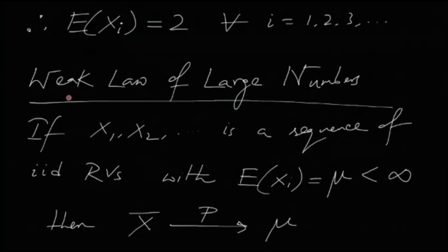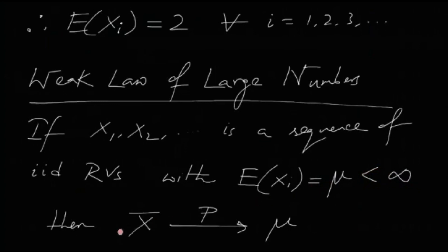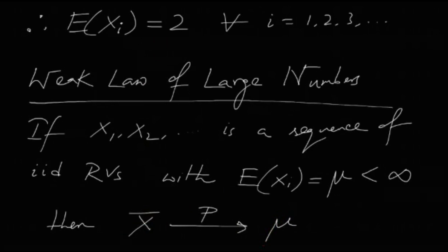By the Weak Law of Large Numbers: if X₁, X₂, X₃, ... is a sequence of IID random variables with E[Xᵢ] = μ, which is a finite quantity, meaning each of them has the same common finite expectation, then X̄ — the sample mean, which is 1/n Σ Xᵢ — converges in probability to μ, the mean of the distribution.